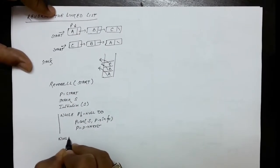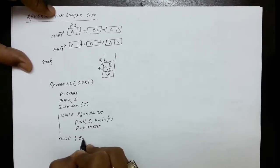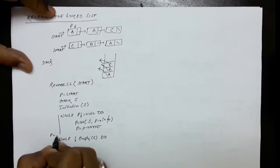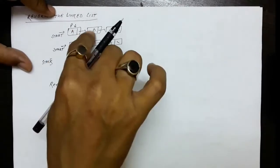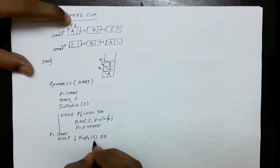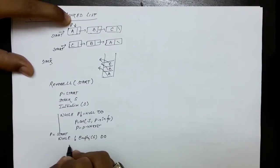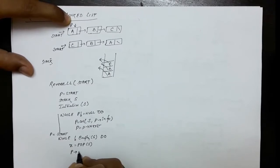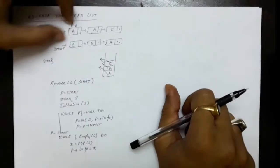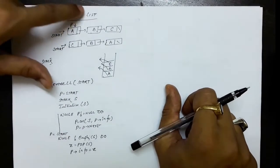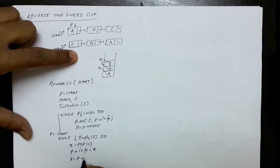Then we pop the values of the stack one by one. But before that, we re-initialize P to point to the start node again, since P has become null. So P equals start. Then while not empty S, we pop the value of the stack and insert this information at the P node. So the first value popped, say C, is stored as the information of the P node. After this, we advance P to the next node: P equals P dot next.